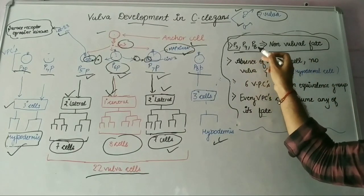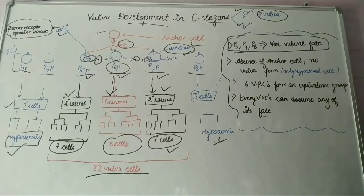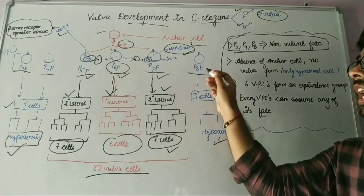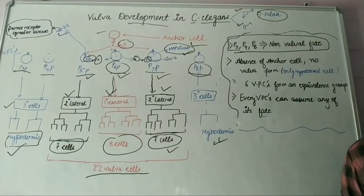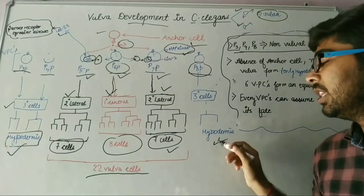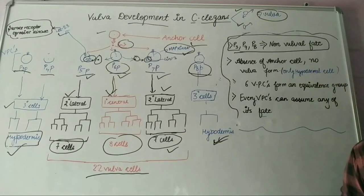Now, P3P, P4P, and P8P have non-vulva fate because they will not encode any vulva cells but they produce hypodermis. That's why there is non-vulva fate.